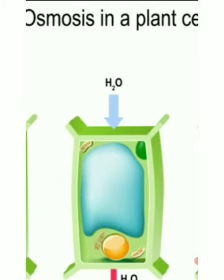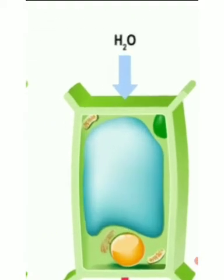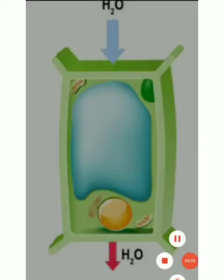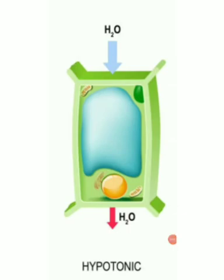If the medium surrounding the cell has a higher water concentration than the cell, meaning the outside solution is very dilute — the salt solution concentration is very less outside the cell — the cell will gain water by osmosis. The water concentration outside is more, so water is absorbed through the semi-permeable membrane. The cell gains water by the process called osmosis.